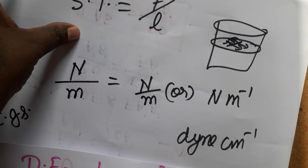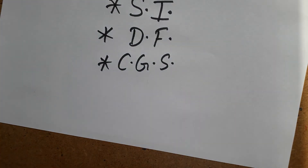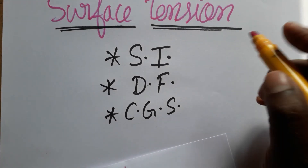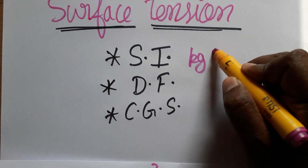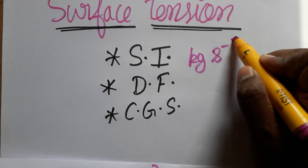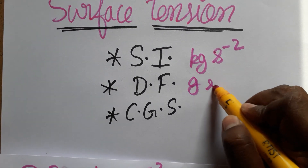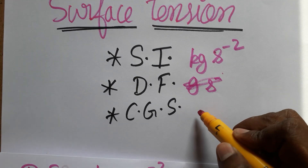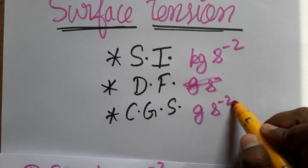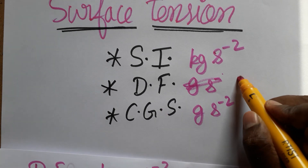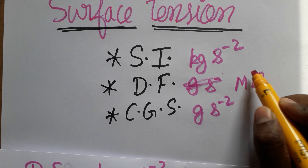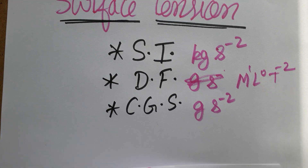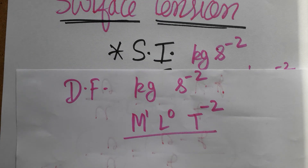In conclusion: the SI unit of surface tension is kg·s⁻², the CGS unit is gram·s⁻², and the dimensional formula is M¹L⁰T⁻². Thank you for watching.